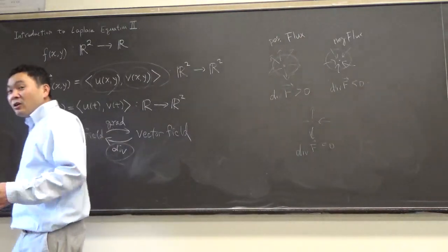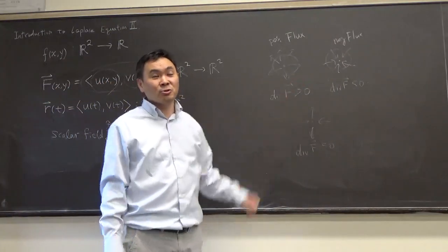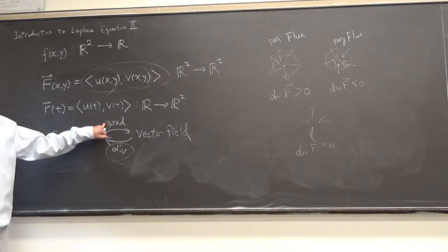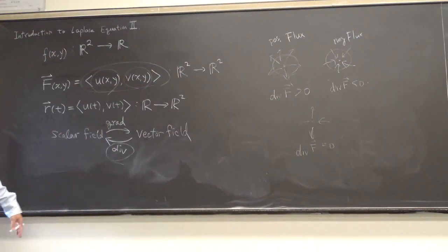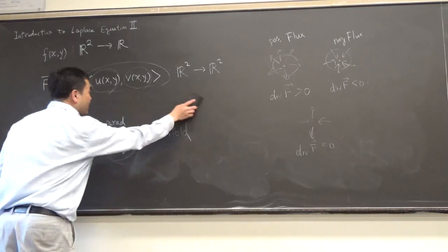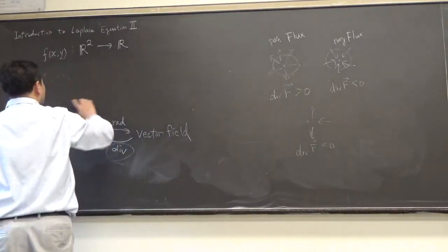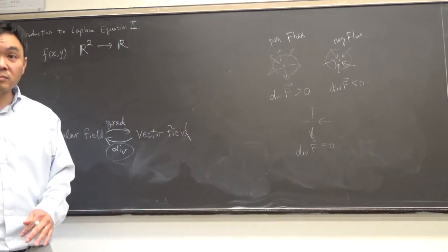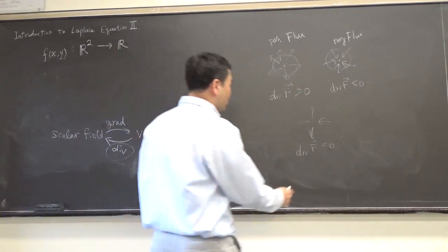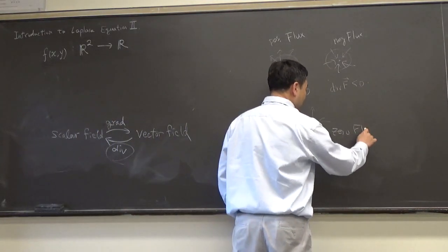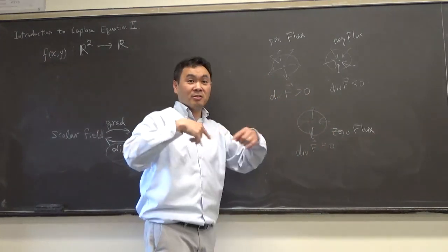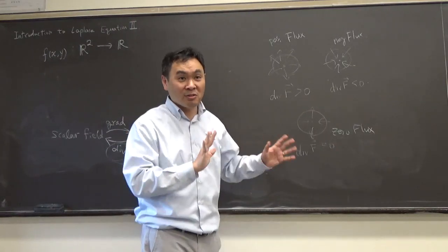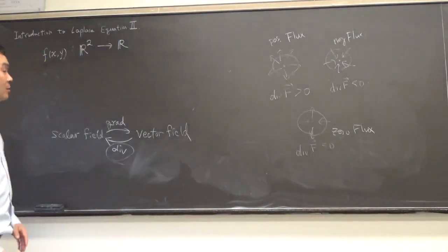Another way to think about it: if you have a small region and look at the flux — a concept from physics — things going out give positive flux, things going in give negative flux. If they're well balanced, divergence equals zero. So if you take a region and the vector fields going in and out are balanced, the net flux is zero.